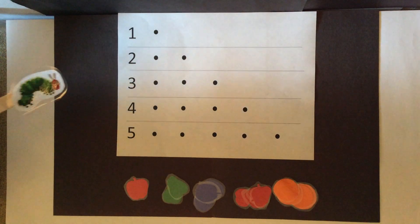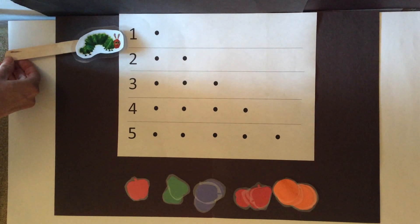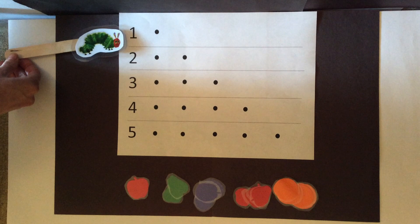Now we are going to follow along with the story and count our fruit. When I say the name of the fruit, find it and put it on the dots next to the number.